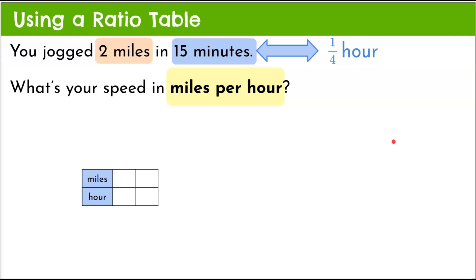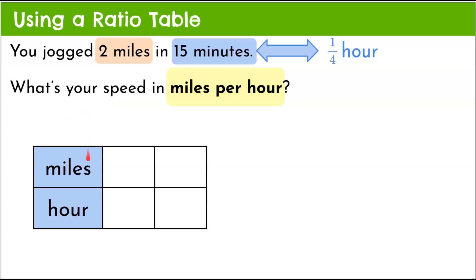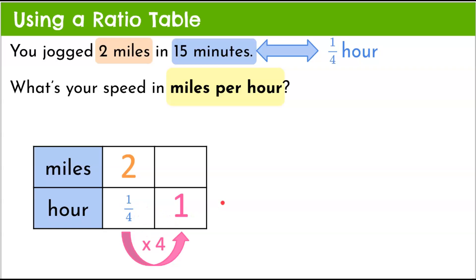Now we're going to use a ratio table — set up horizontally with miles and hour. We know we've gone two miles in one-fourth of an hour, and we want to know what one full hour is. From one-fourth to one, we need to multiply by four — one-fourth times four is one. Whatever we do to this part of the ratio, we must do the same to the miles: two times four is eight. That remains an equivalent ratio, giving us eight miles in one hour.